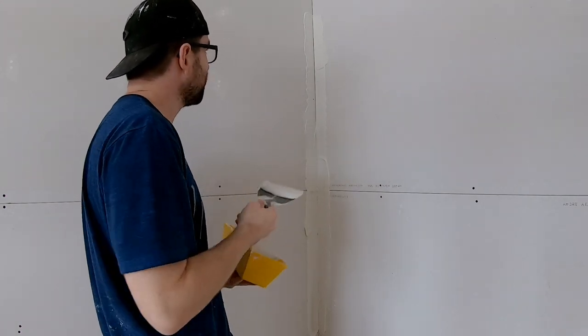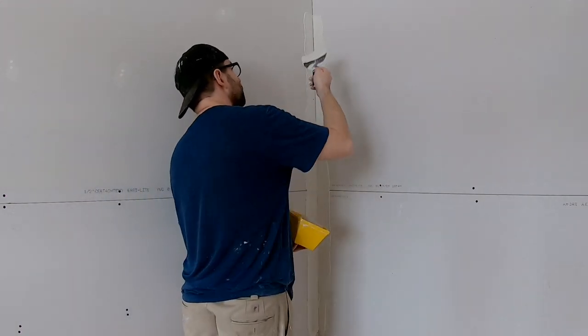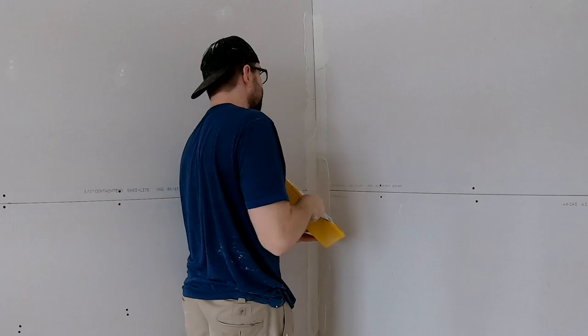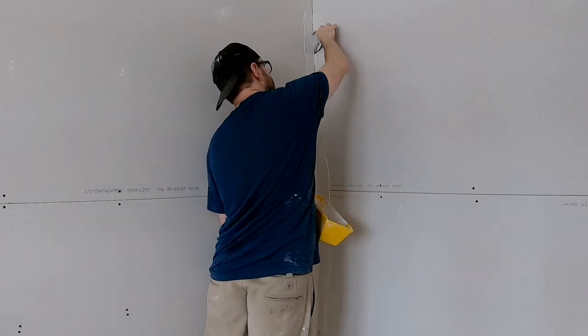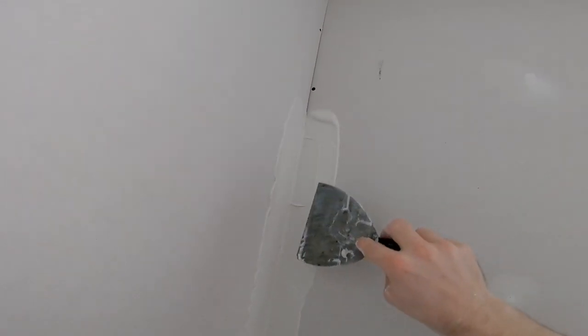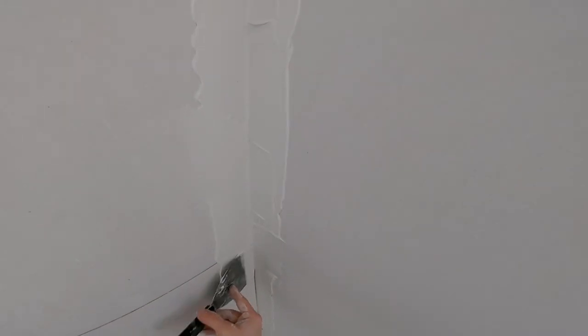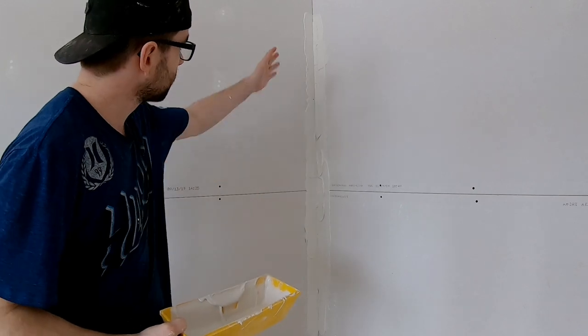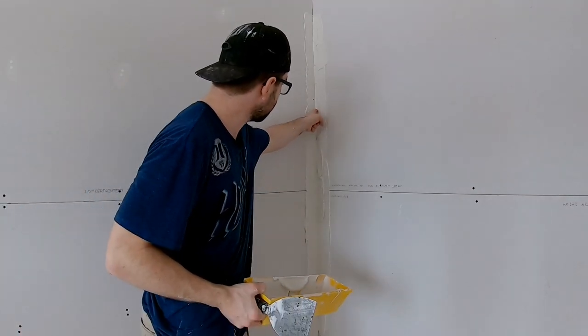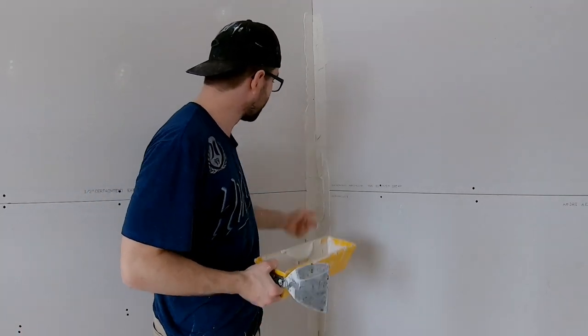Now we want to check and make sure that there's no spots that could cause a bubble. We're just going to fill in any gaps, checking for anything like that. So now I'm satisfied that that's a good consistent coat. I don't see any spots that could potentially become a bubble.